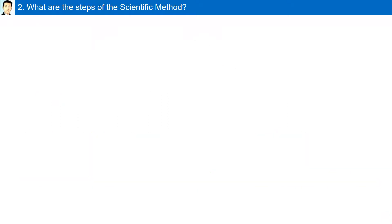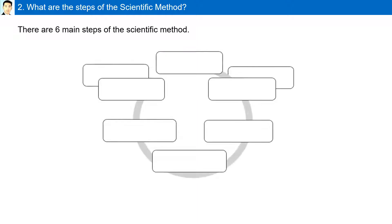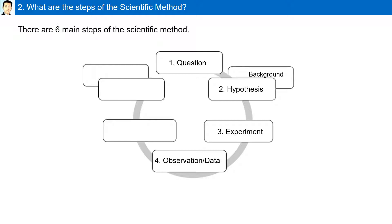What are the steps of the scientific method? There are six major steps of the scientific method. First, question, which is sometimes followed up by background information. The second step is hypothesis. Third, experiment. Fourth, observation and data. Five, analysis. Six, conclusion. And sometimes we also add communication.